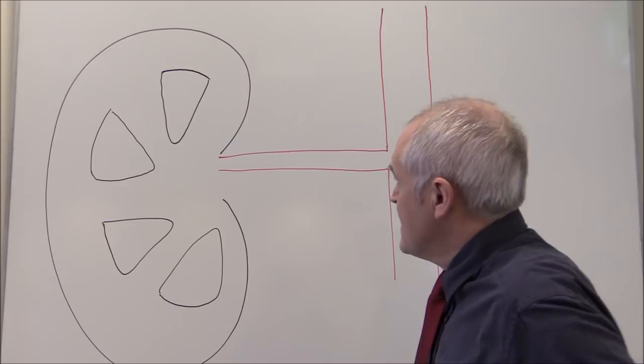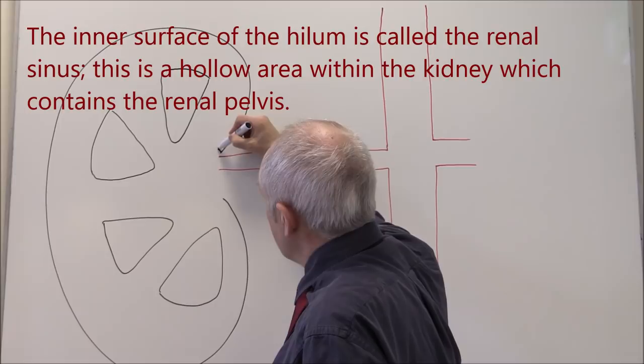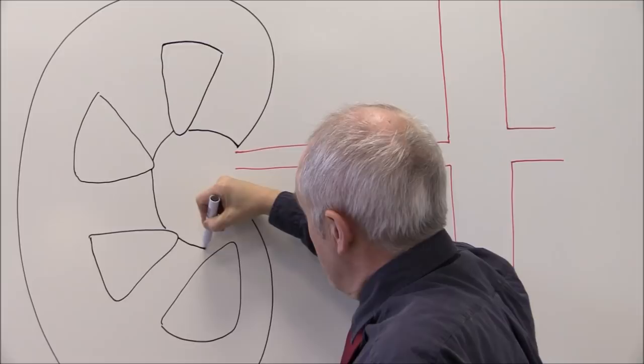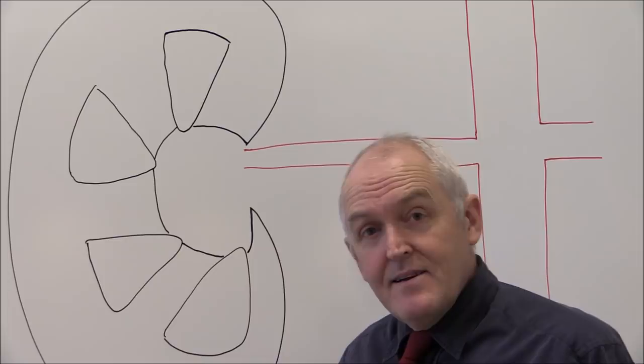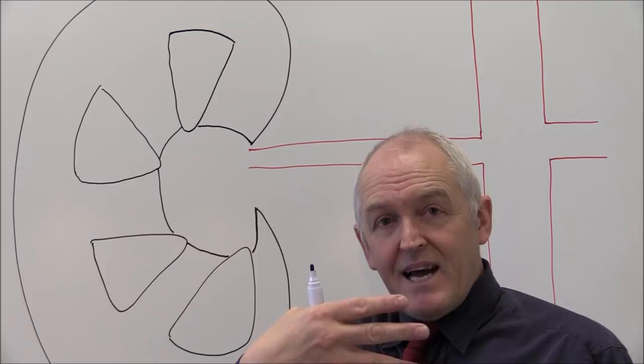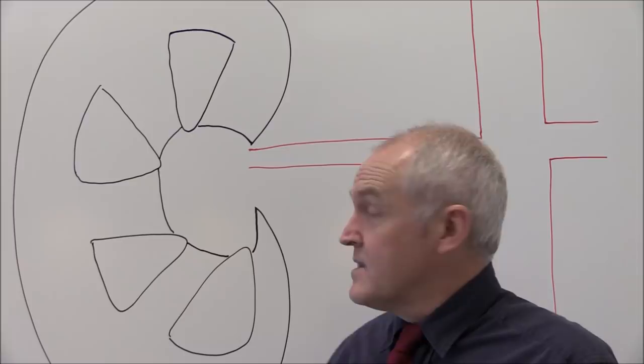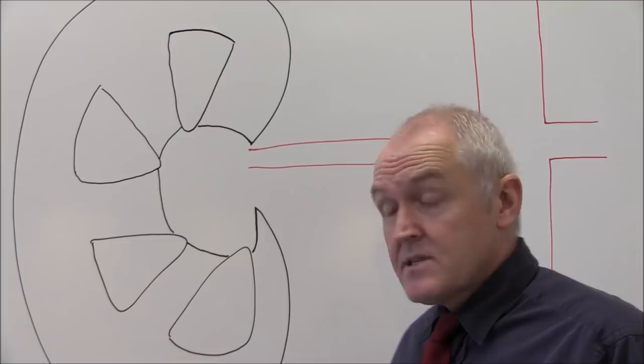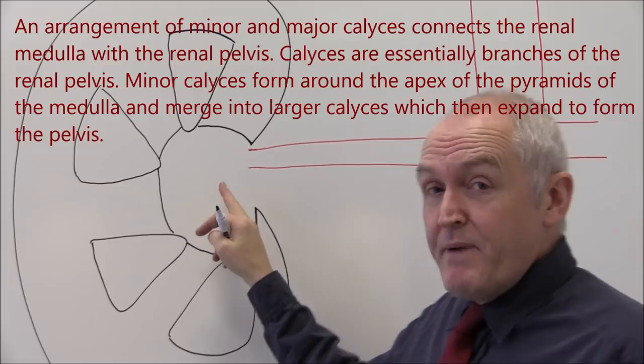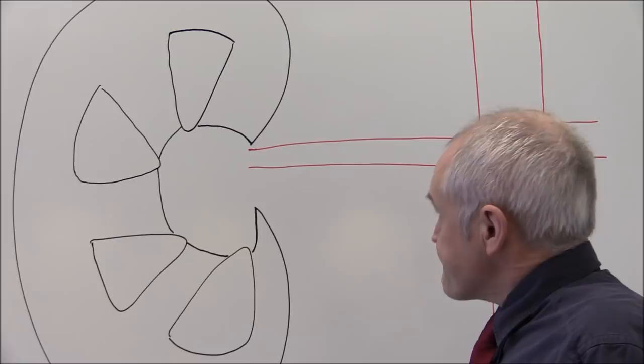The kidney is essentially hollow in a sense, because it contains the renal sinus. The renal sinus is this hollowed-out area in the middle of the kidney. It's through the renal sinus that the arteries pass and the veins pass carrying blood in the opposite direction. There are also lymphatic vessels and nervous vessels in the renal sinus, and of course the calyces and the renal pelvis are also located in this area. Any spare space in there is filled up with protective adipose tissue.